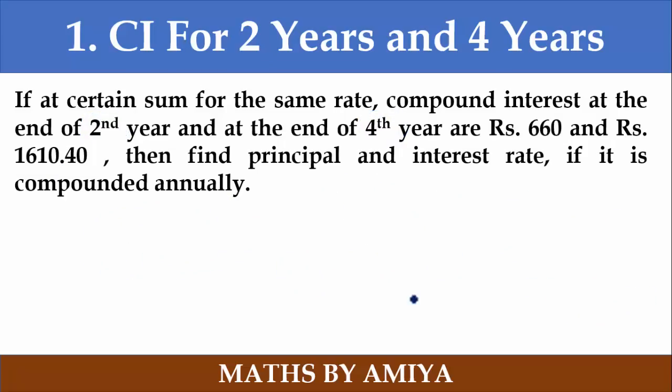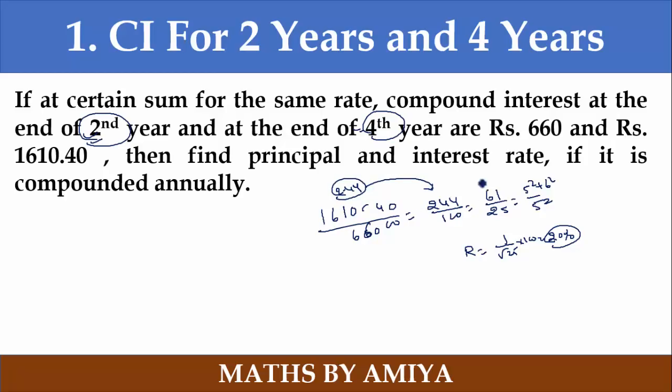I will try this next question now. Check the same concept in this one. If you have 2nd year and 4th year, divide the 4th year compound interest by the 2nd year, that is 1610.40 divided by 660 is 100. If you solve, you have 244/100. When you solve this, it's 61/25, which is 5 squared. And this is 5 squared plus 6 squared. So what is my rate? Rate is under root of 25 into 100, that is 20%. So whenever you have 2nd year and 4th year, just divide. CAT can easily find 2.44. If you have calculator, it will easily find 2.44. Simplify and get the rate. And 20% for 2 years.